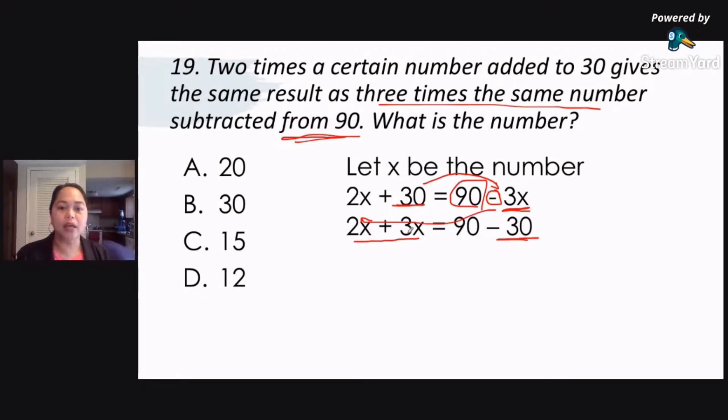Then combine like terms. 2x plus 3x would be 5x. 90 minus 30 would be 60. So we're left with 5x equals 60. Now to get the value of x, you need to divide both sides by 5. Because here it's multiplied by 5. So to get the x, we'll divide it by 5. We'll use the opposite operation. So that would be divided by 5, and this would also be divided by 5. That would leave us with x equals 60 divided by 5, which gives us the answer of letter D, 12. So letter D, 12 is the correct answer.